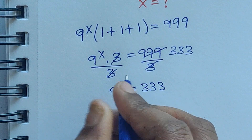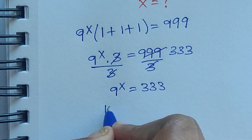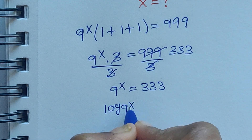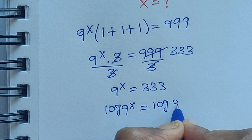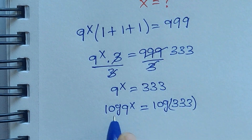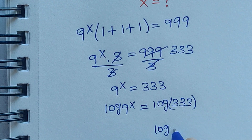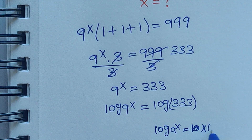Now apply log on both sides. Log of 9 to the power of x equals log of 333. Using the logarithm power rule — log a to the power of x equals x log a — we apply this formula here.